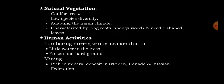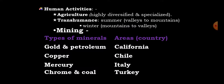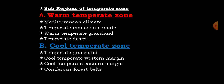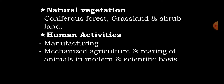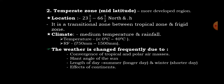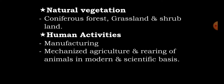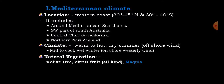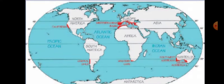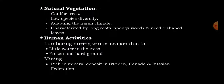In summary, the Temperate Zone is a region located between the tropical zone and the frigid zone. It consists of two sub-regions: the warm temperate zone and the cool temperate zone. That is all about today's lesson — thank you for listening and for your attention.